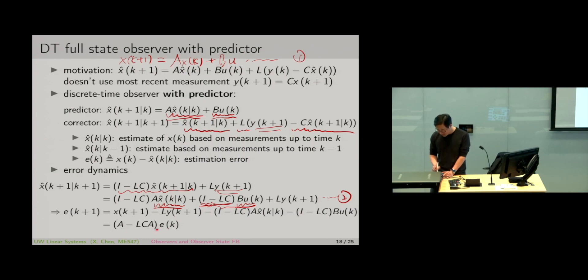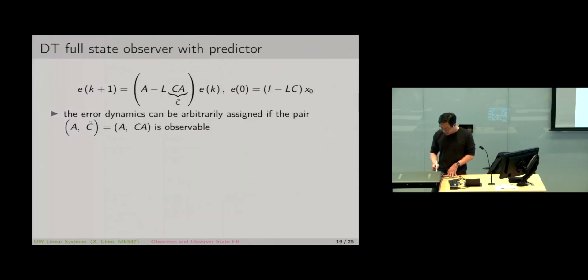Let's take a look at this in slightly more detail. We have (A-LCA) as the new observer error dynamics. If you treat this CA together as C tilde, then (A-LC tilde) is the closed loop observer A matrix.